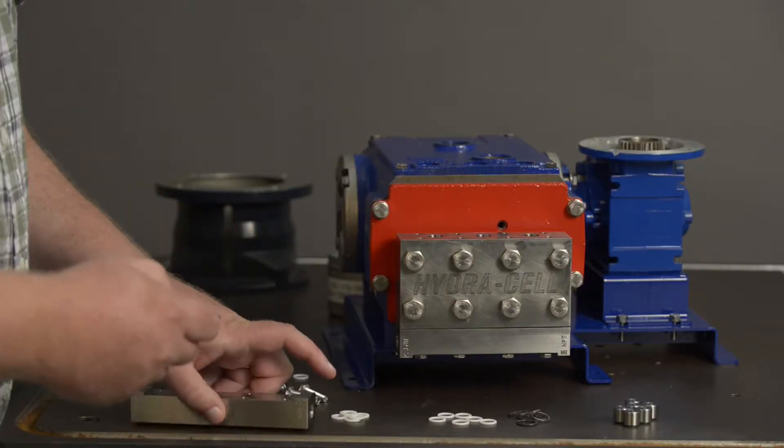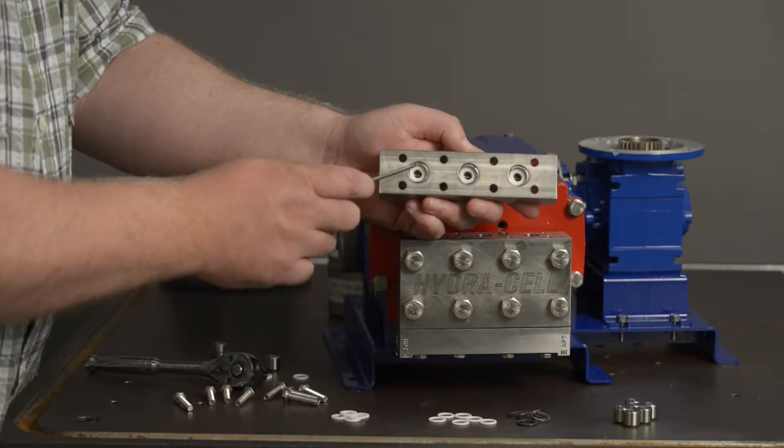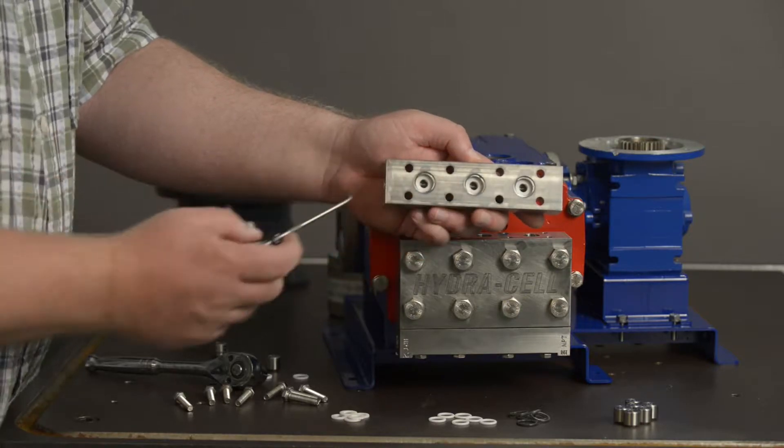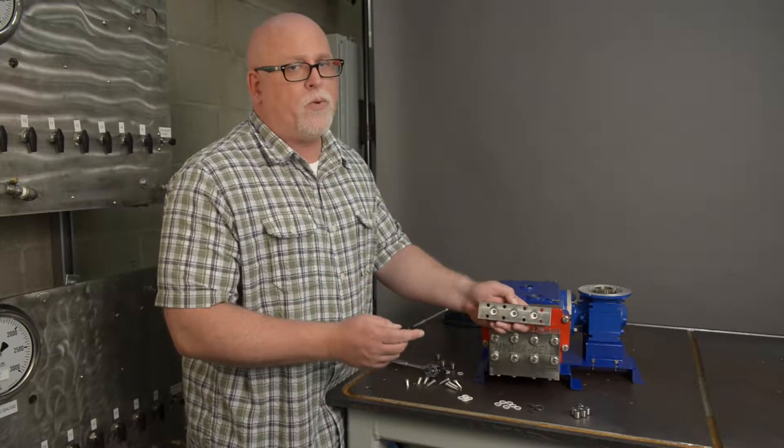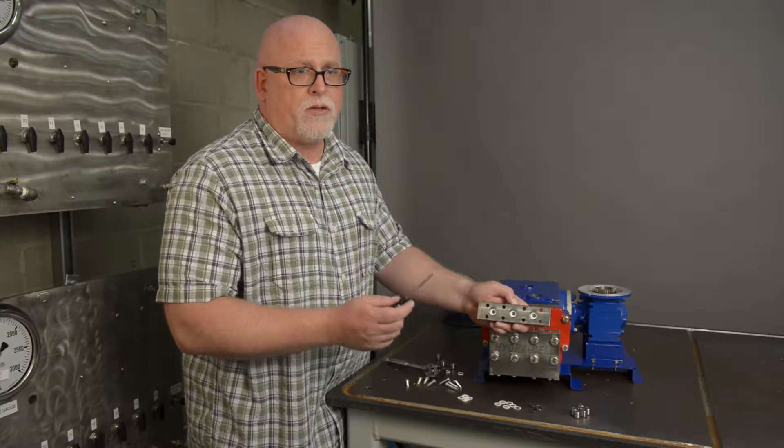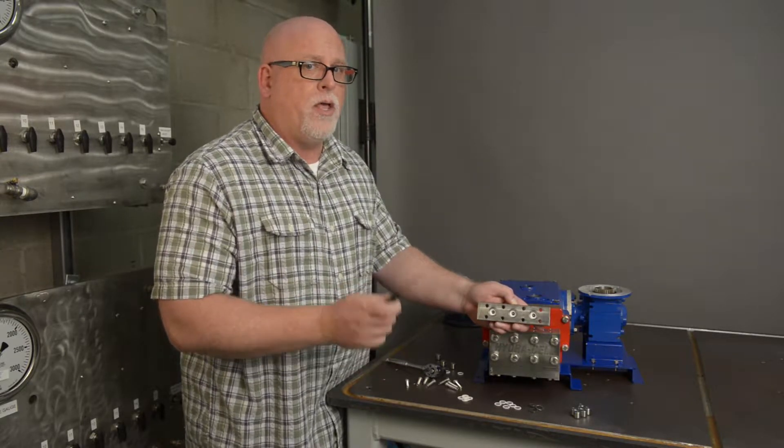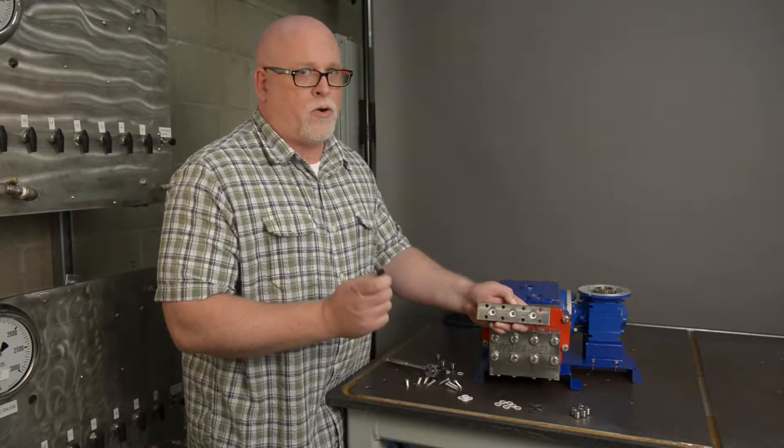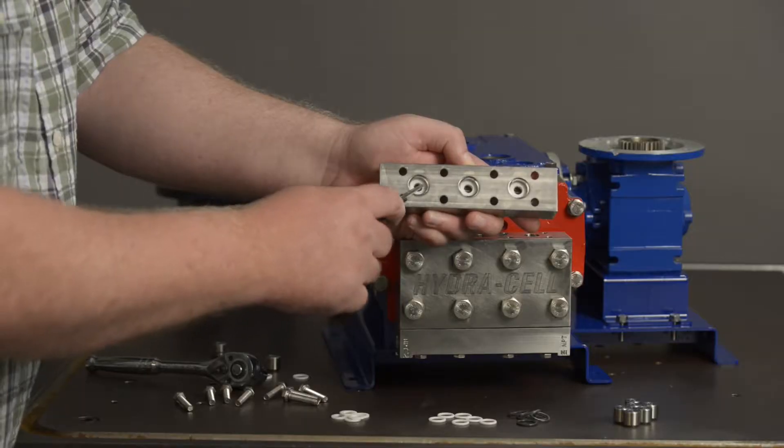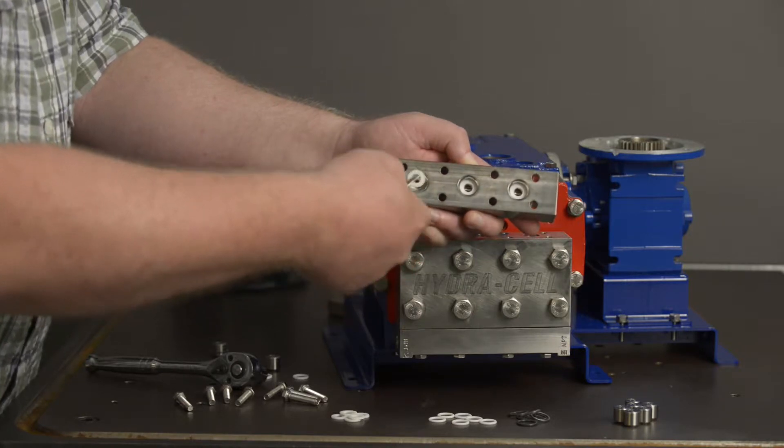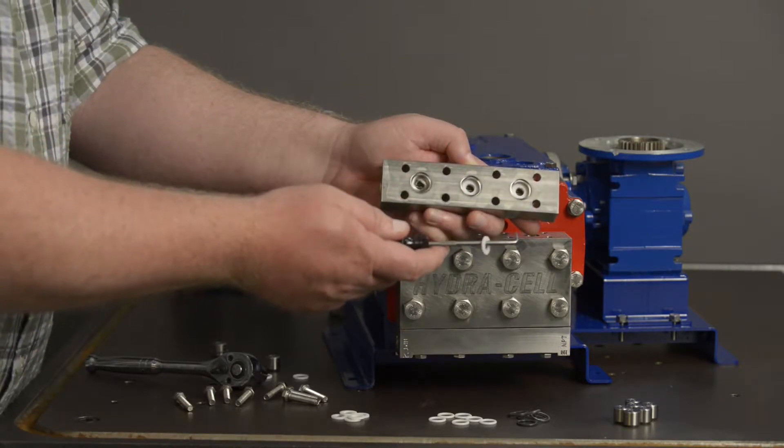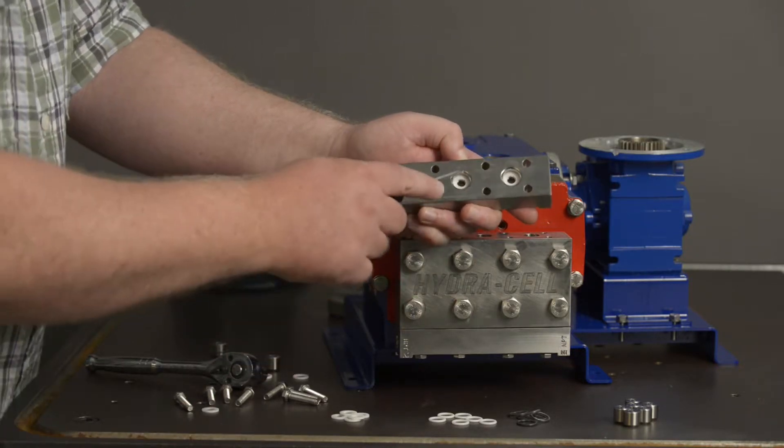Now in the top portion of the manifold you will also see our white crush rings. You will need to remove those. Those cannot be reused. So that's an important thing to note. Please do not reuse. These are a one-time use and they come out just as easily as the o-rings. They come right out with your pick tool or a small screwdriver.